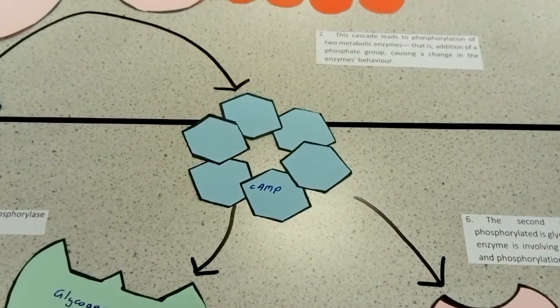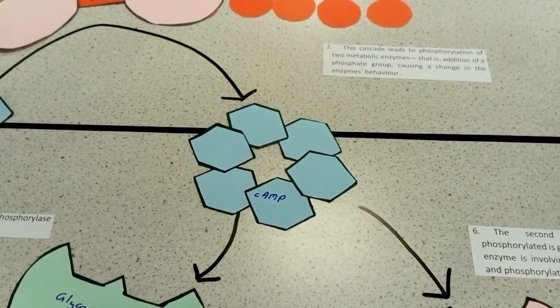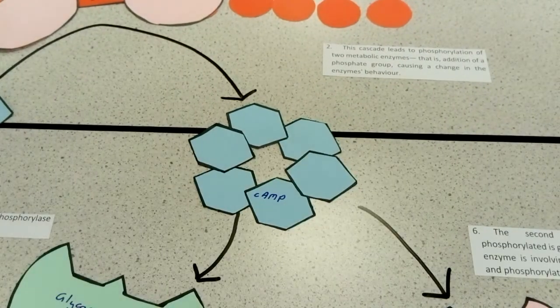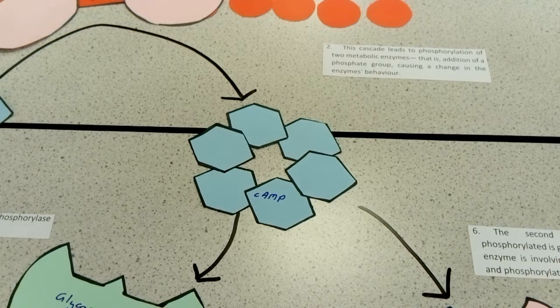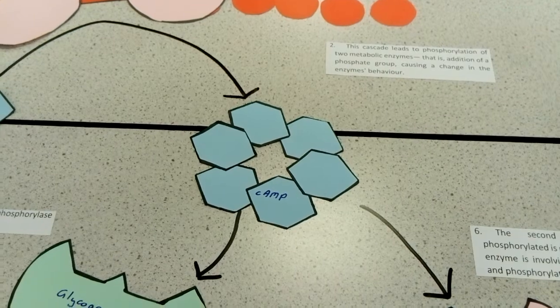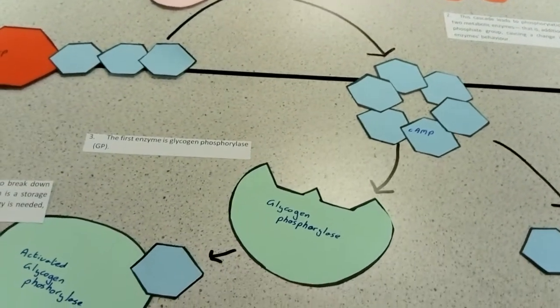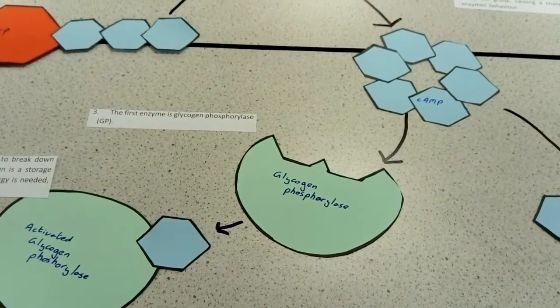The cyclic AMP will then go and affect a series of different enzymes involved either in the construction of glycogen or the breakdown of glycogen. Firstly, cyclic AMP will go and bind to a molecule of glycogen phosphorylase.